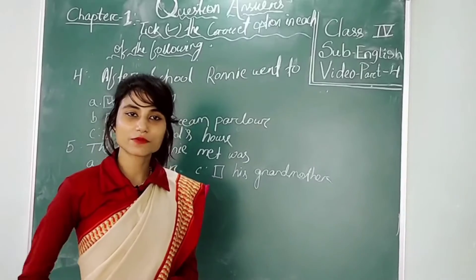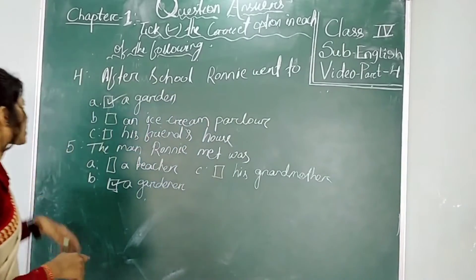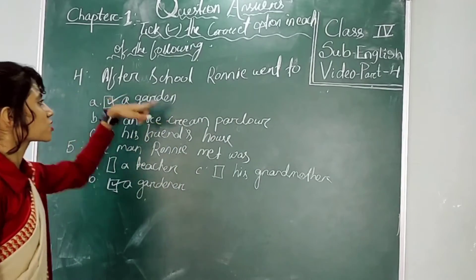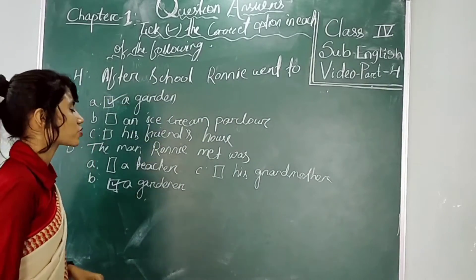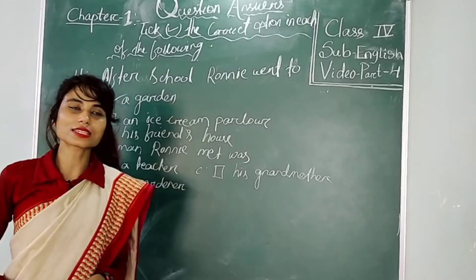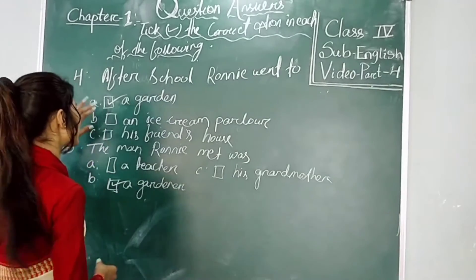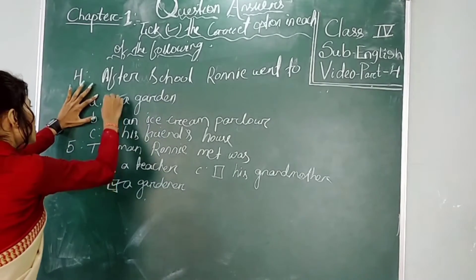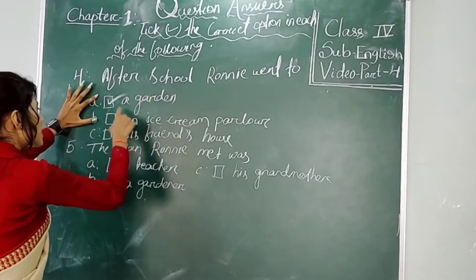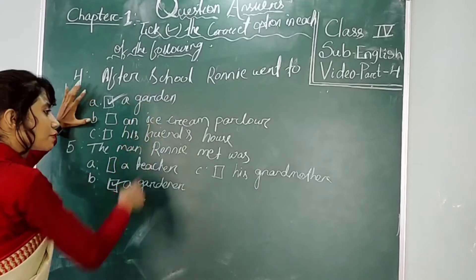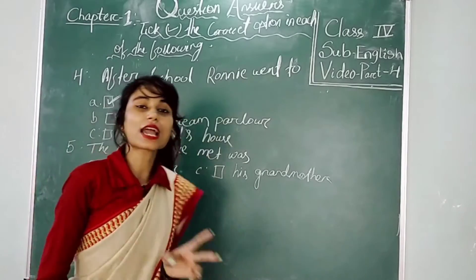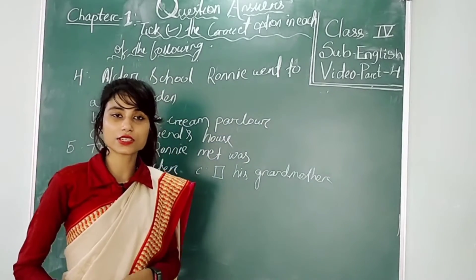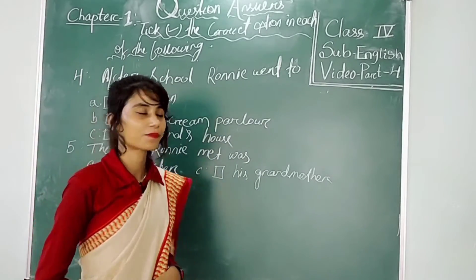Number 4: after school, where did Ronin go? While Ronin went after school — yes, he comes in already. In this story we have learned that Ronin goes to the garden of Gurjan.